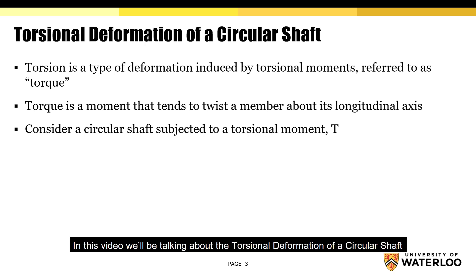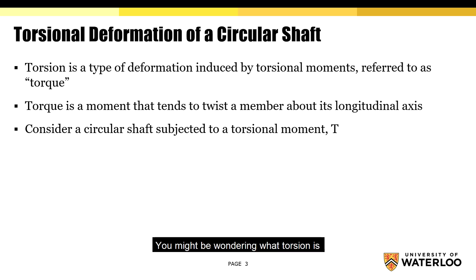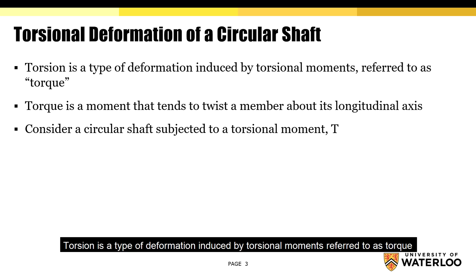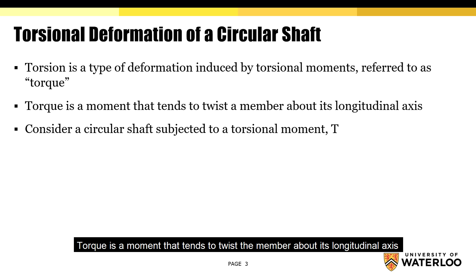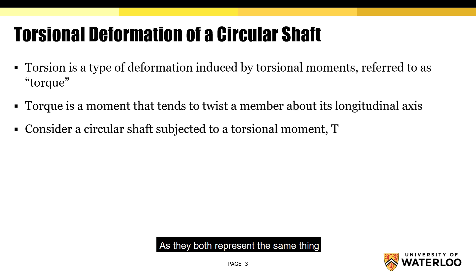In this video, we'll be talking about the torsional deformation of a circular shaft. Torsion is a type of deformation induced by torsional moments referred to as torque. Torque is a moment that tends to twist the member about its longitudinal axis. The terms torque and torsional moment can be used interchangeably as they both represent the same thing.